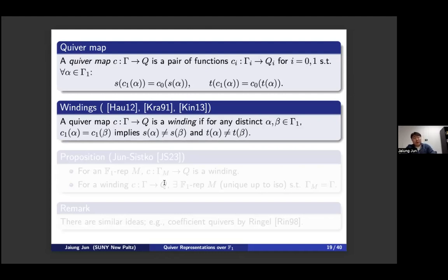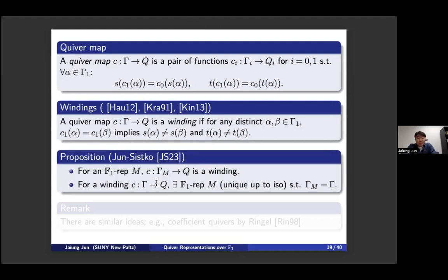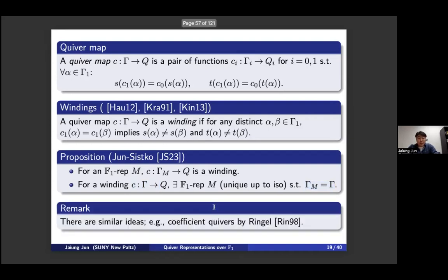In fact, the structure map is something more specific: what people call a winding. A winding is a quiver map satisfying the condition that if two different arrows map to the same arrow, then those arrows must have different sources and different targets. What we proved is that an F1 representation in the sense of Szymanski corresponds precisely to a winding — you cook up the coefficient quiver with structure map from an F1 representation, giving a winding, and conversely any winding uniquely determines an F1 representation up to isomorphism.